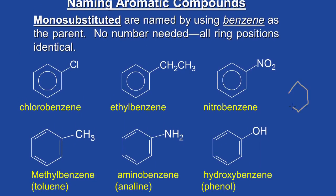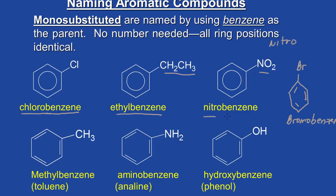We're going to learn how to name the aromatic compounds. For monosubstituted benzenes, we just name benzene as the parent and we don't need any number to indicate the position of the substituent. So if we have a benzene ring with a chlorine, this would be chlorobenzene. If I were to put a bromine here, this would be bromobenzene. Here we have a benzene ring with an ethyl group, so we would just call that ethylbenzene. This group, the NO2 group, is a nitro group — we would call this nitrobenzene.